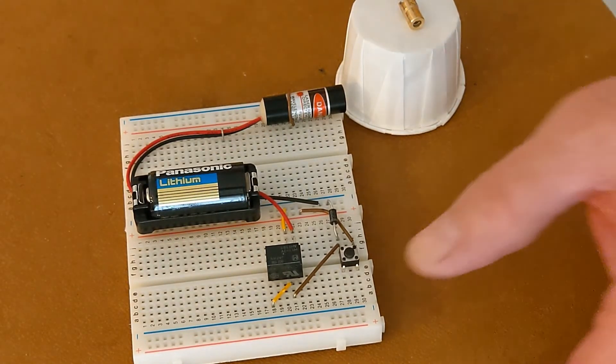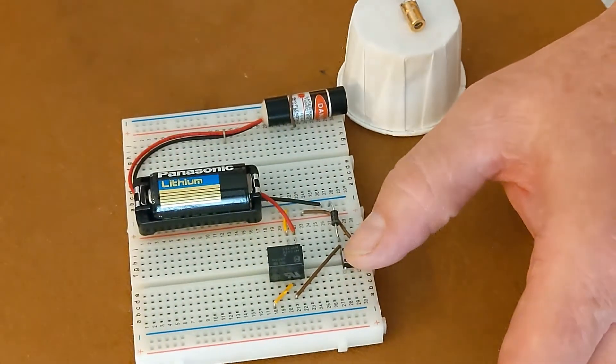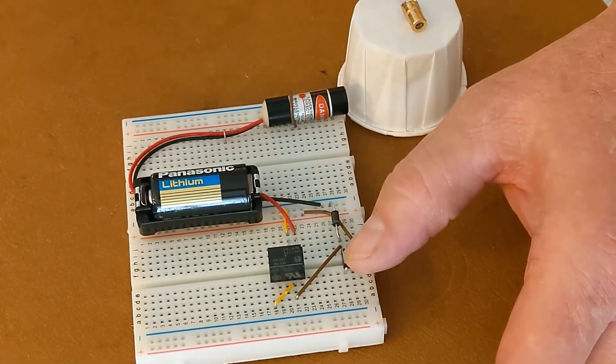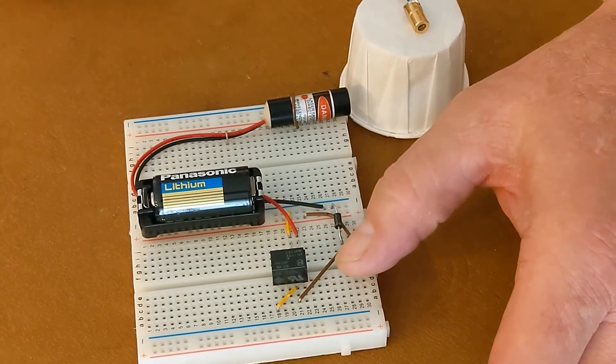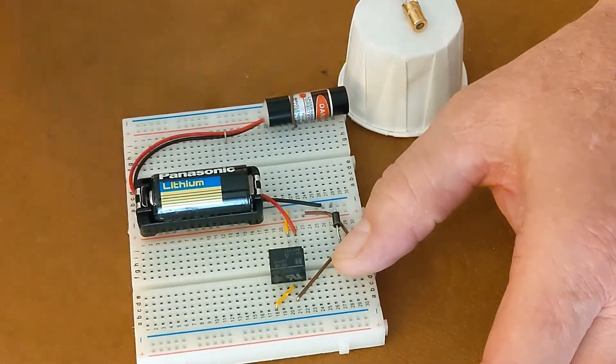And so when you push the switch you're activating the relay, causing it to pull in, pull away from the normally closed. And as long as you hold the switch, the relay is activated and held away, so you're only getting that initial burst of light when you first press the button.